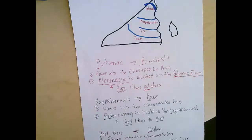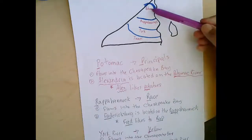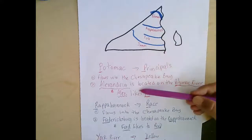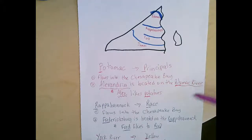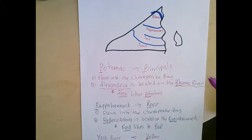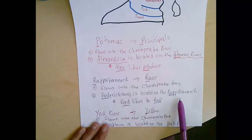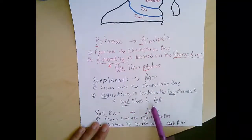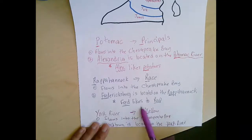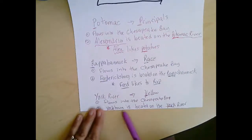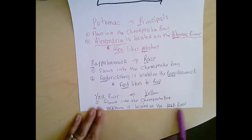Looking at our map, we've done the Potomac — Alexandria is located on the Potomac River, 'Alex likes potatoes.' Fredericksburg is located on the Rappahannock River, 'Fred likes to rap.' And Yorktown is located on the York River.